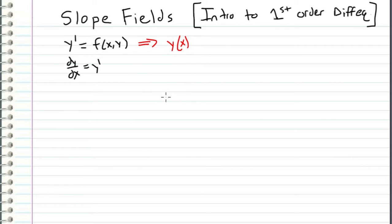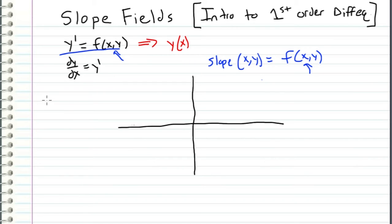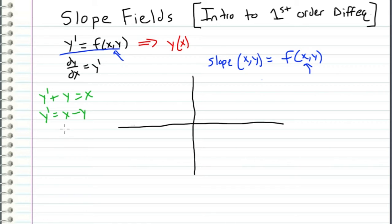We can take a first order differential equation and express it in this form, which is equivalent to saying the slope at any given point x, y is equal to f(x, y). For example, let's consider the first order differential equation y prime plus y is equal to x. Solving for y prime, we get y prime is equal to x minus y. This means that the slope at any point x, y has to equal x minus y, and we can start plotting slopes at random points.